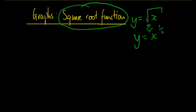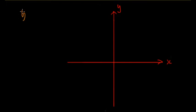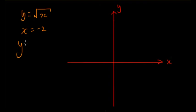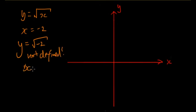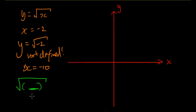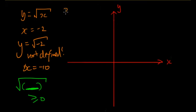Looking at the equation y equals the square root of x: what happens when x equals negative 2? y equals the square root of negative 2, but that's not defined. Same thing for x equals negative 10 — not defined. For all negative values it's not defined. The important thing to note is that anything inside a square root bracket must be positive, must be greater than or equal to zero.